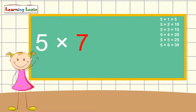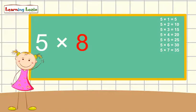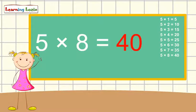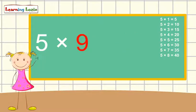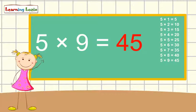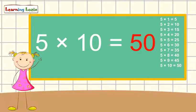five times seven is thirty-five, five times eight is forty, five times nine is forty-five, five times ten is fifty,